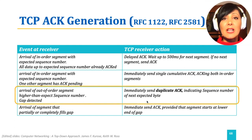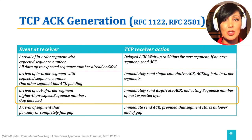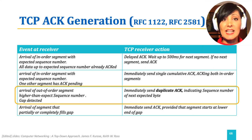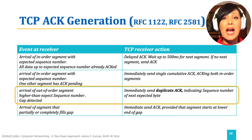On the arrival of out-of-order segments with a higher than expected sequence number, the receiver immediately sends the duplicate ACK for the last in-order segment, indicating the expected byte. Remember, what TCP does with the out-of-order segment is upon the decision of the implementer.